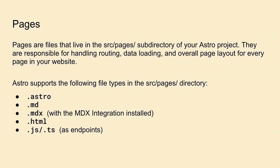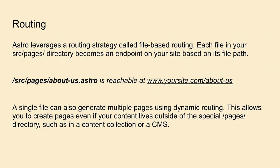In Astro you can create pages. If you're familiar with Next.js, you can add any file with the extensions `.astro`, `.md`, `.mdx`, `.html`, or `.js` under the `src/pages` folder, and it automatically becomes a route — it has file-based routing. So if you have a file under pages called `about-us`, it's reachable at `/about-us`. You can also create dynamic routes.